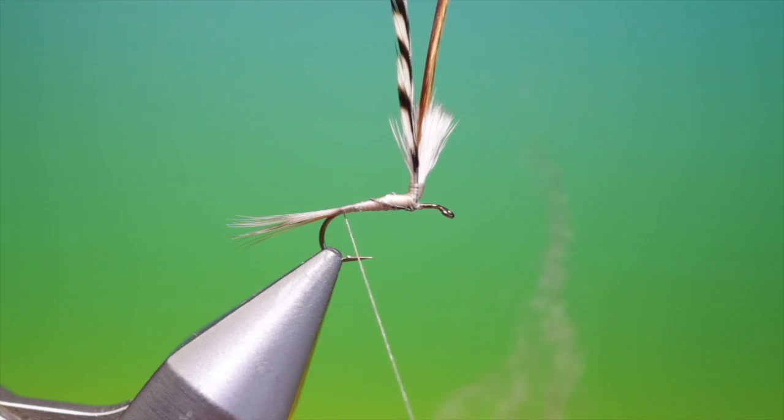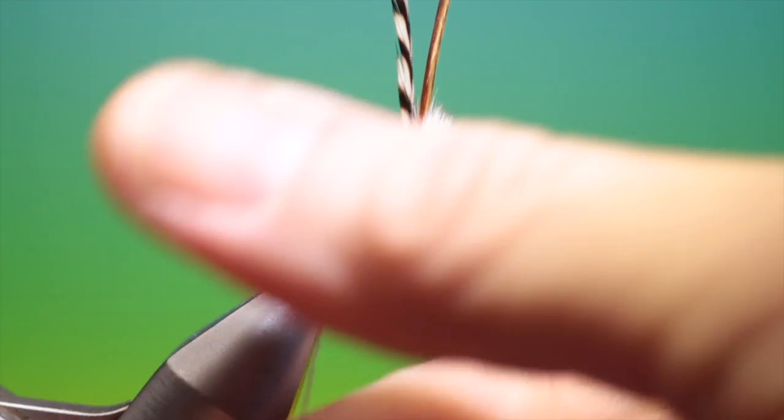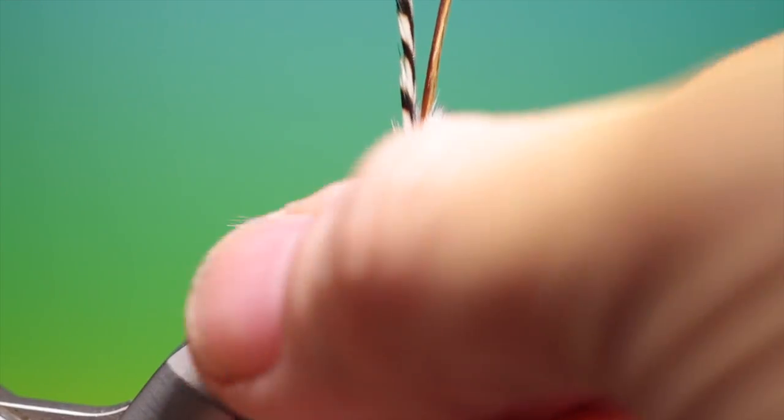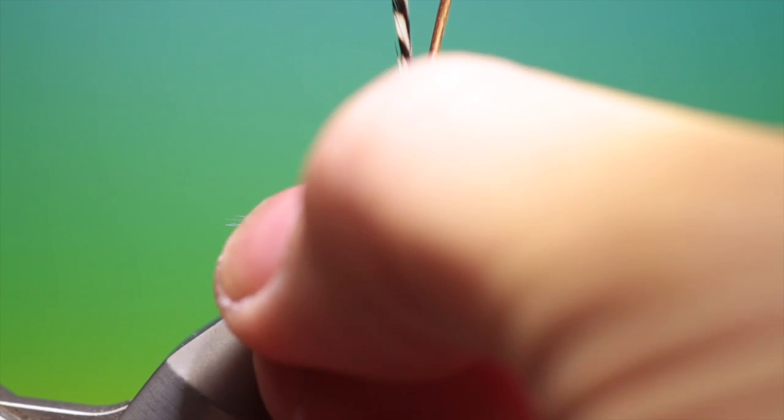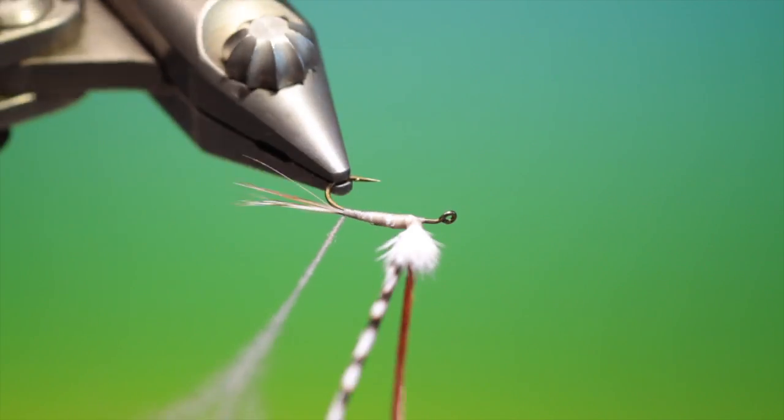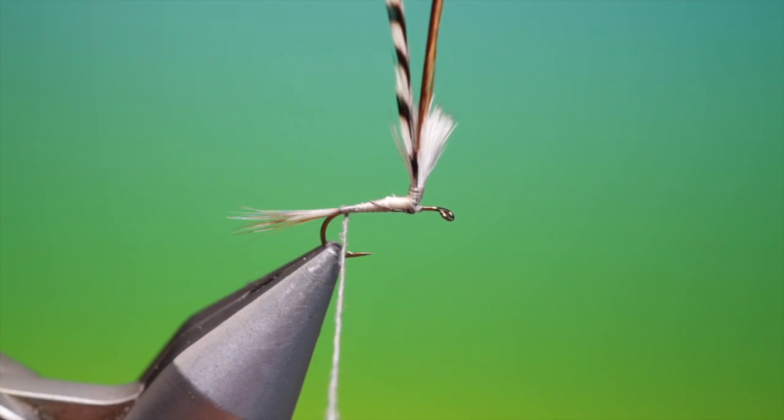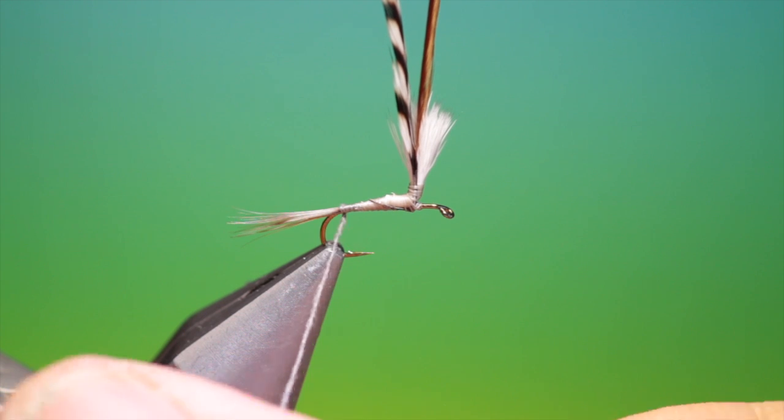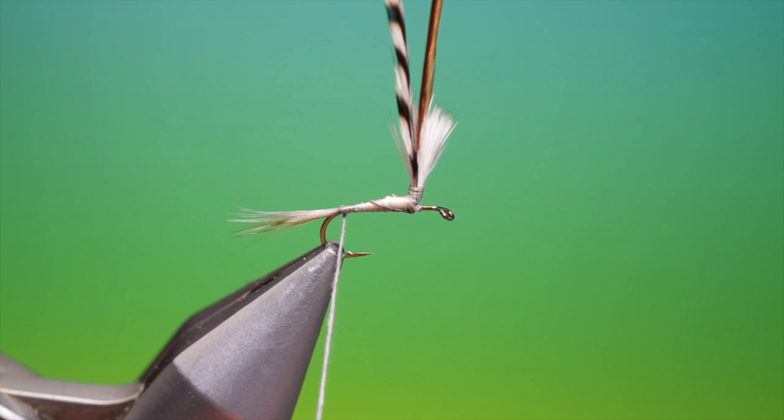And we'll take some Adam's grey superfine dubbing. And we'll just dub that on. Very finely at the top. And then we'll slide that up to the tail base. And we'll just catch that in. Like so. Then we can wrap the rest of our dubbing. Spin it tightly.